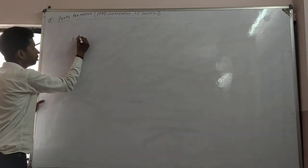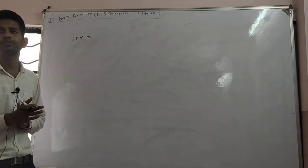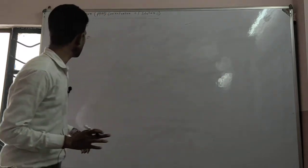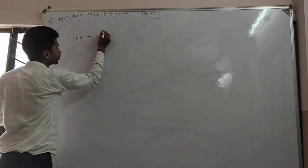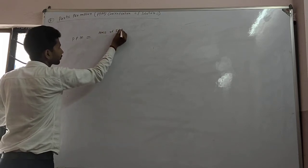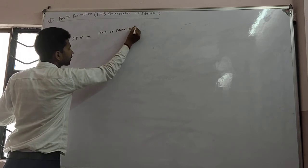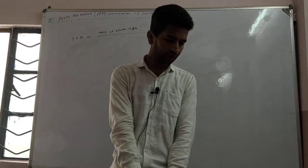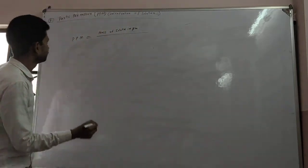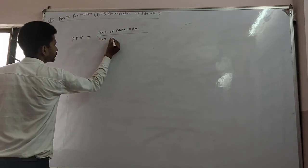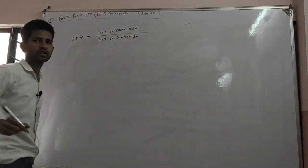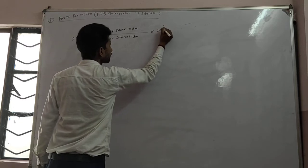If we write this in formula form, PPM is equal to mass of the solute in gram upon mass of the solution in gram, multiplied by 10 to the power 6.